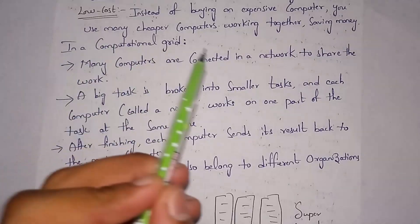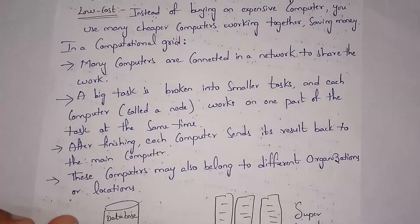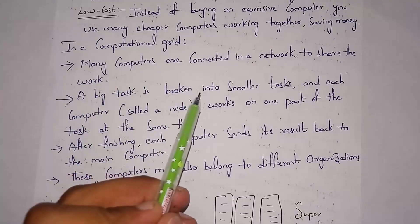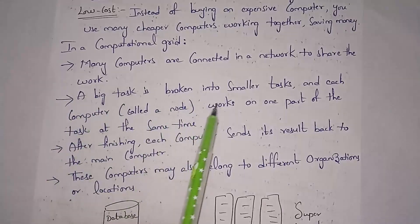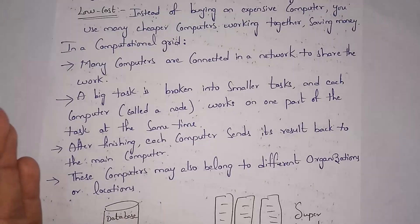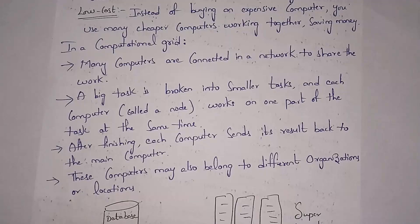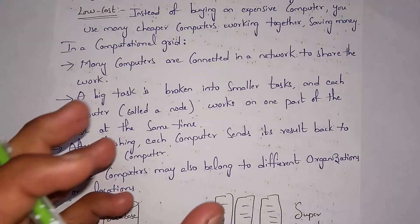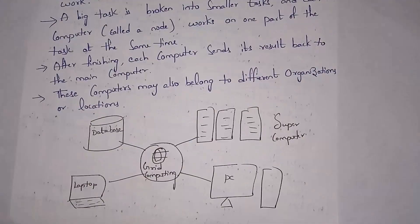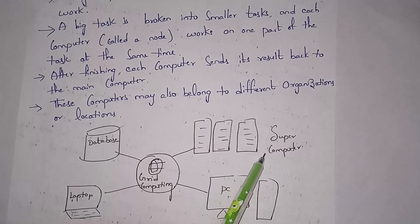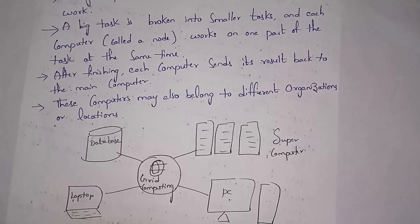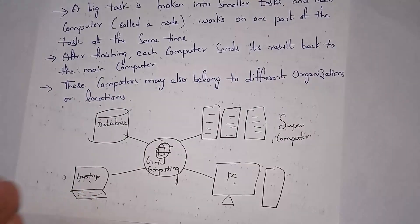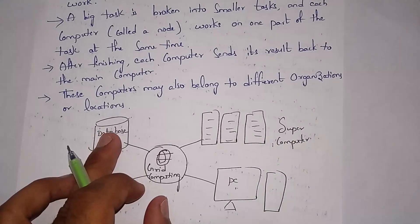In computational grid, many computers are connected in a network to share work via the internet. A big task is broken into smaller subtasks and each computer works on one part at the same time, so all computers perform work simultaneously, saving time. After finishing, each computer sends its result back to the main computer. These computers may belong to different organizations or locations — examples include laptops, desktops, supercomputers, and databases, all connected via internet.